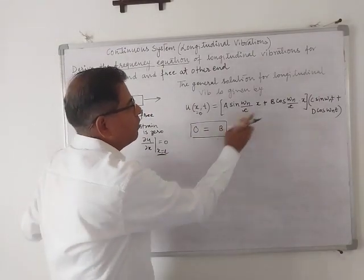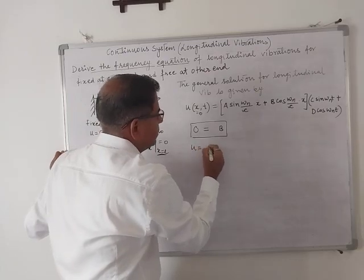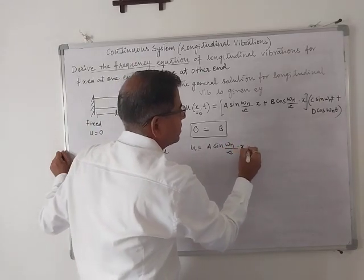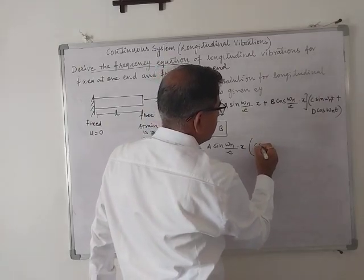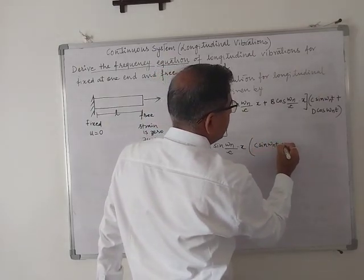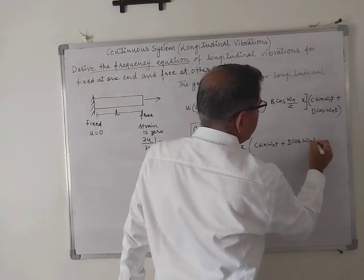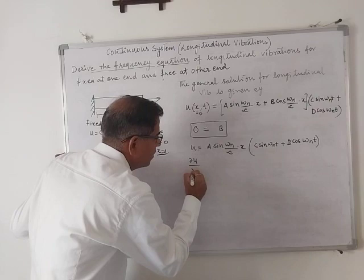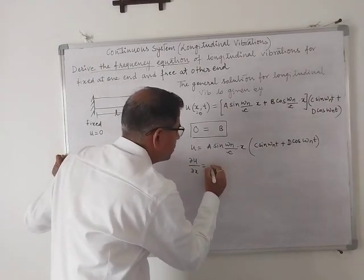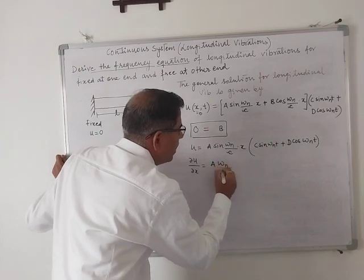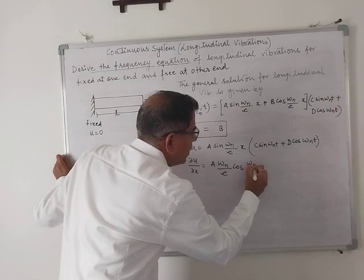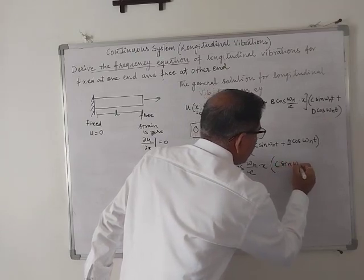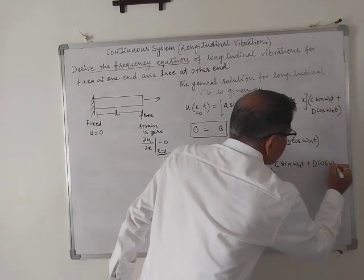We put the value of B as zero, so the equation is reduced to u = A sin(omega_n/c * x) * [C sin(omega_n * t) + D cos(omega_n * t)]. Then we differentiate with respect to x, so del u by del x equals A * omega_n/c * cos(omega_n/c * x) * [C sin(omega_n * t) + D cos(omega_n * t)].